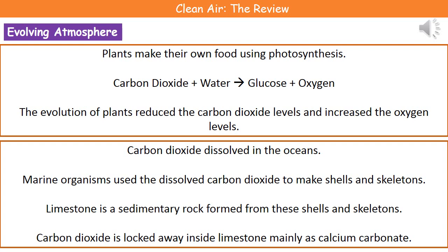In addition to that, we lost carbon dioxide from the atmosphere in a couple of other ways. First, it dissolved in the oceans because carbon dioxide is a soluble gas. Marine organisms then used that dissolved carbon dioxide to make their shells and skeletons. As those organisms died, their shells and skeletons were used to form the sedimentary rock limestone. So limestone is made primarily from the shells and skeletons of dead marine organisms, locking away a significant amount of carbon dioxide — mainly as the chemical calcium carbonate.